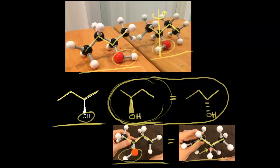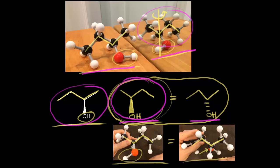So there are two main ways to draw enantiomers. The first way is to reflect the compound in a mirror — we took this compound, reflected it, and drew what we saw, which gave us this drawing of the enantiomer. Notice the difference between this drawing and our original compound: the carbon skeletons are the same, but the only difference is we changed the wedge to a dash. So that's another very convenient way to draw an enantiomer: if you're starting with a wedge, change it to a dash; if you're starting with a dash, change it to a wedge.